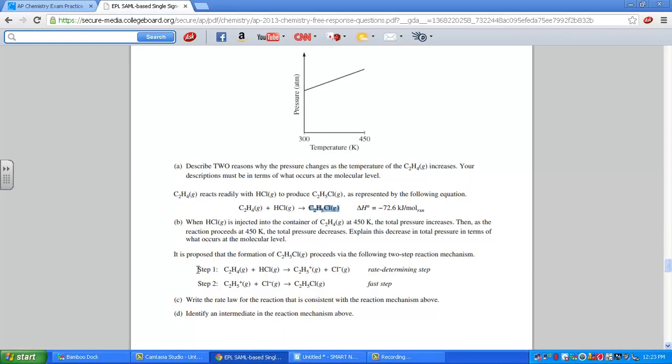Here's a mechanism. Step one, we see the C2H4 colliding with HCl, giving us C2H5 positive and Cl negative, so two ions. There we see C2H5 plus with the Cl then going on and forming our final product, C2H5Cl. The rate determining step is the first step. So write the rate law, letter C.